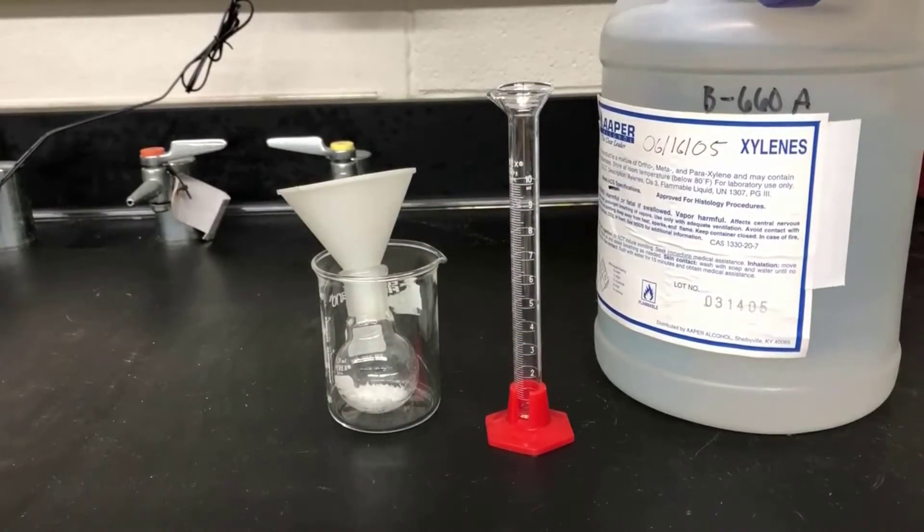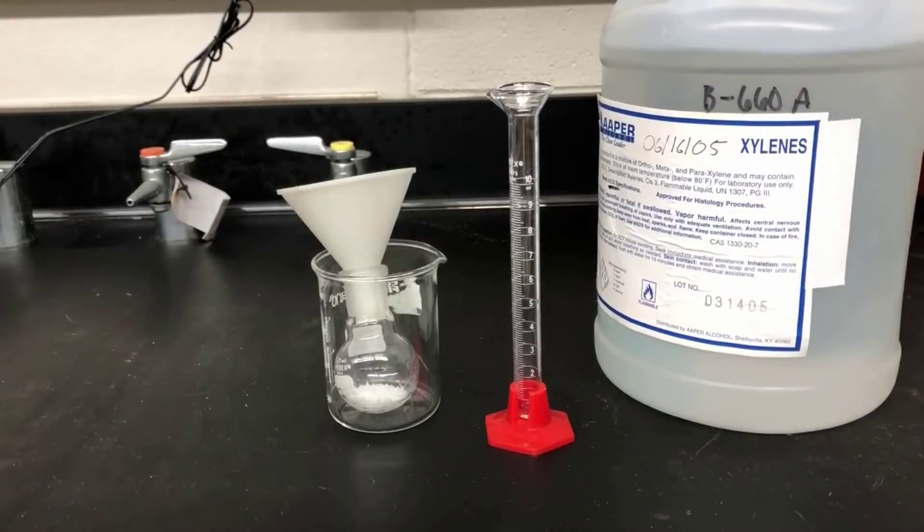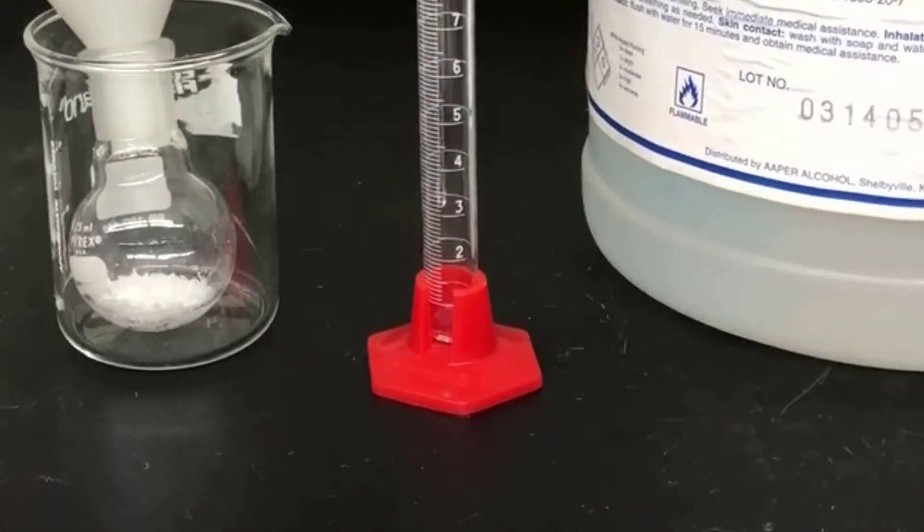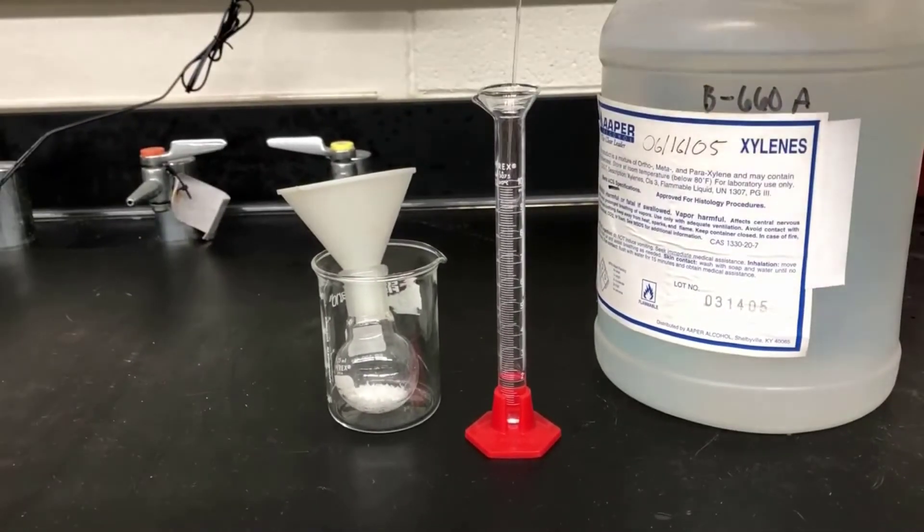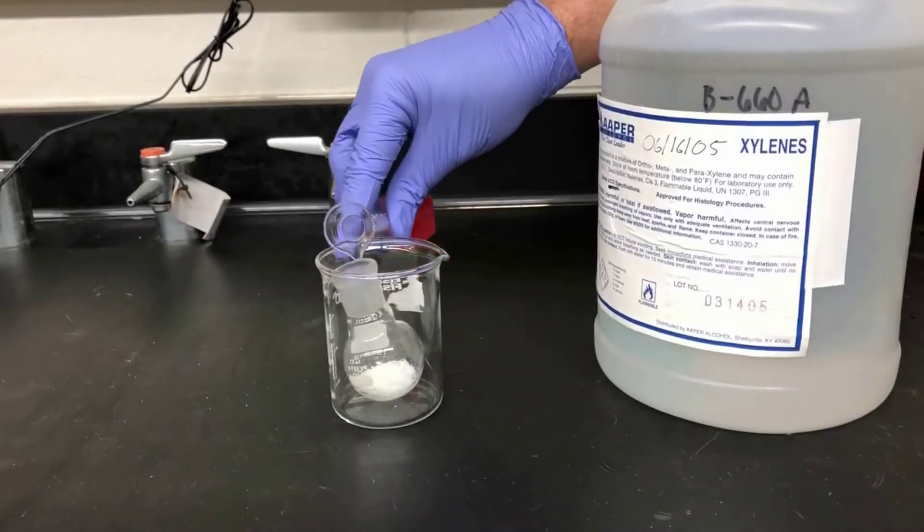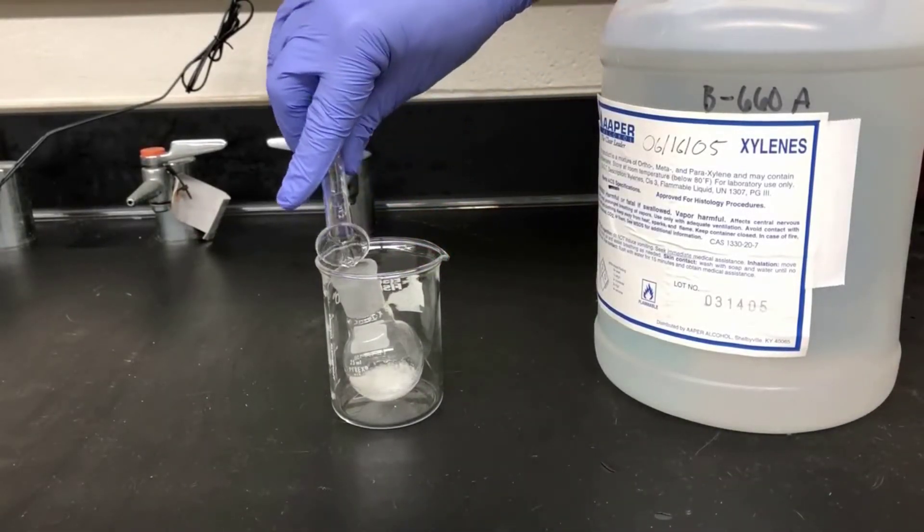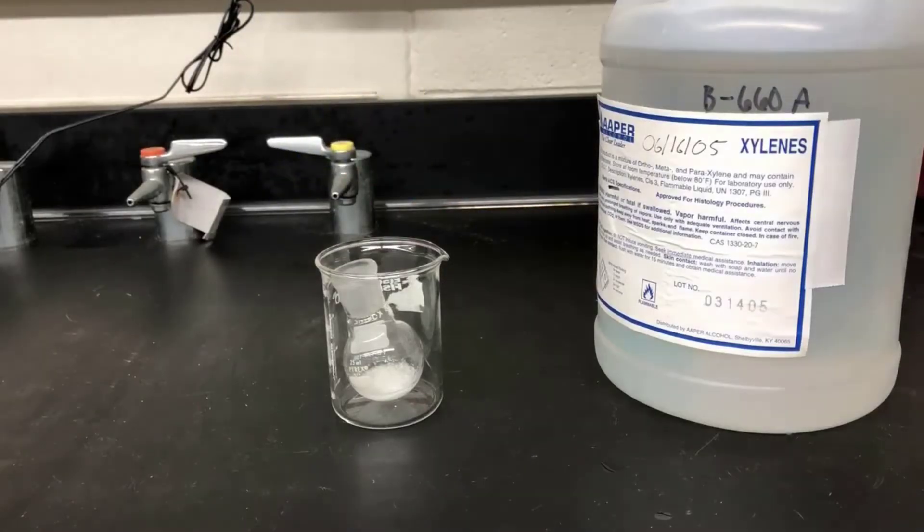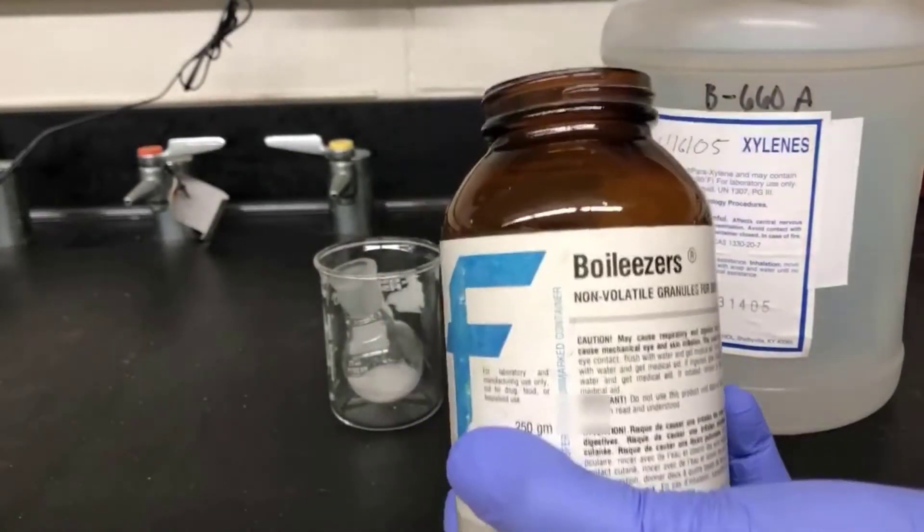Next, I'll measure out the solvent for today's experiment, which is xylenes. Xylenes is a mixture of three isomers, ortho, meta, and para. I'll measure out 2 milliliters of it here. Then I'll add it to the reaction flask. Next, I'll add a few boiling chips.